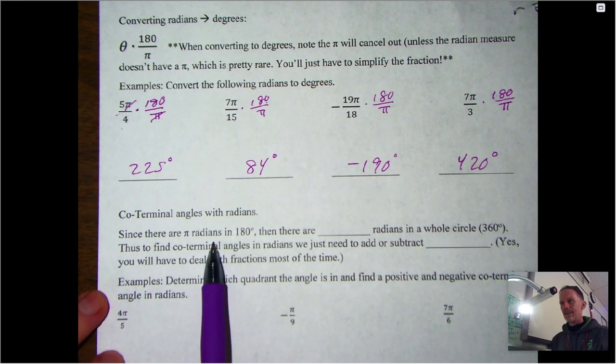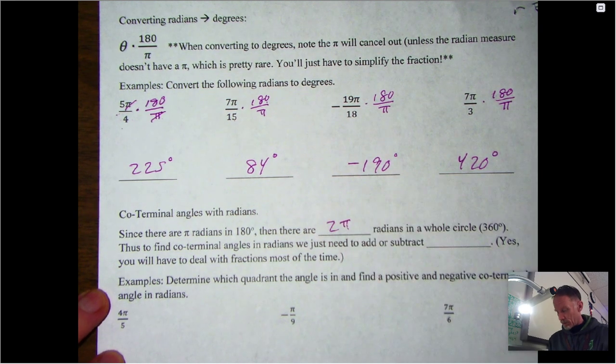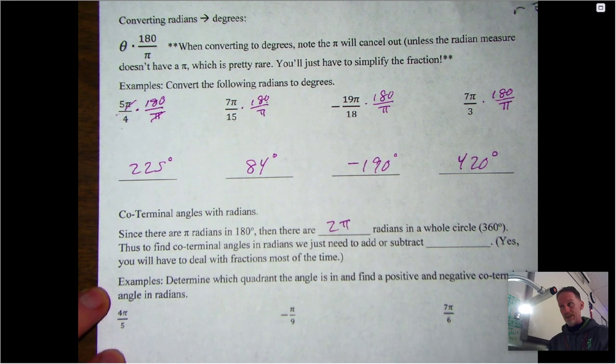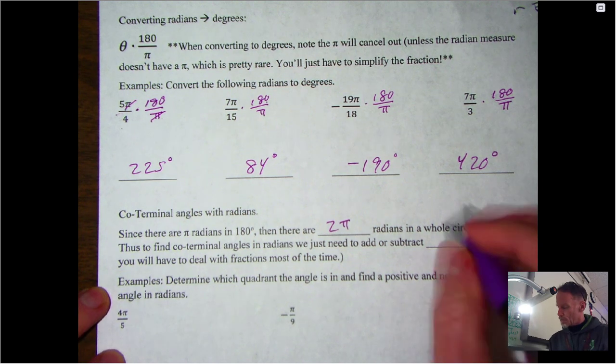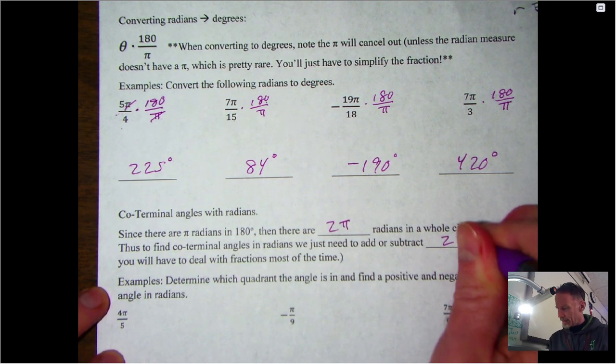So now for radians we're going to be adding or subtracting 2π. The only bad news here is we are going to have to deal with some fractions, but it's super easy. Let's do this first one: 4π over 5.